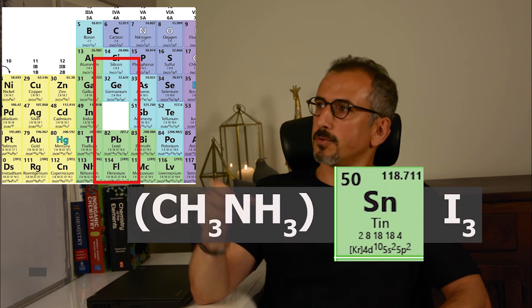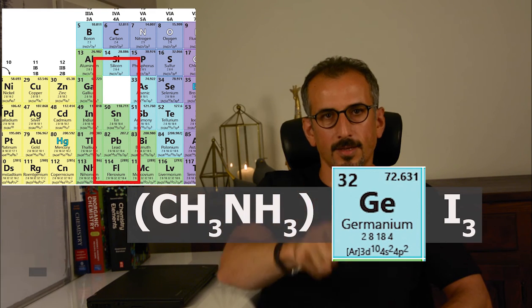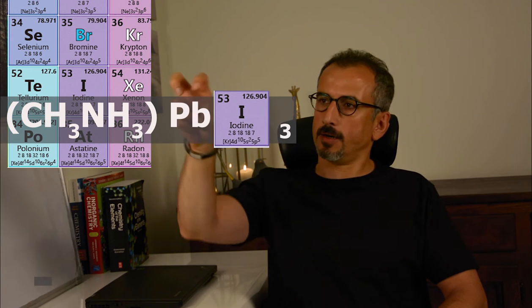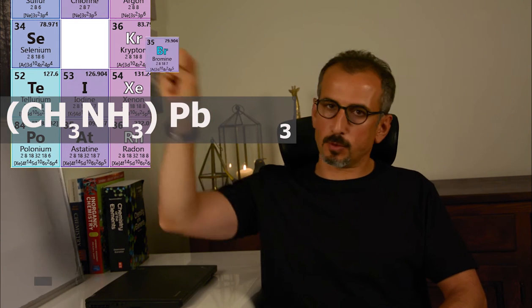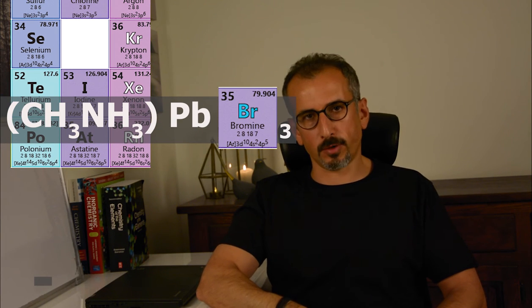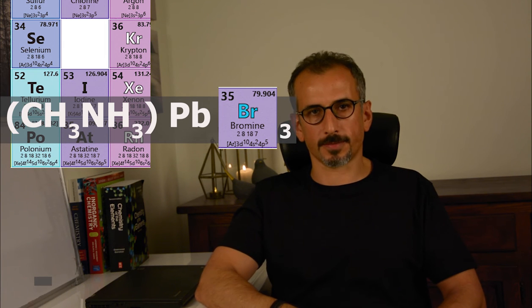We can even put germanium instead of lead, and still we have a new material. Or we can take iodine out of the structure and put bromine there, and end up with methyl ammonium lead bromide — a new material with new properties. Fantastic, yeah? Or no? This was easy.